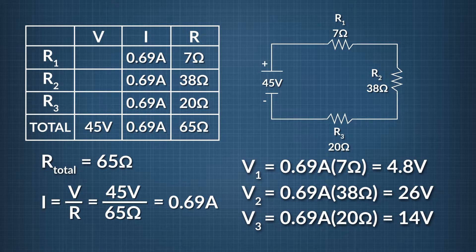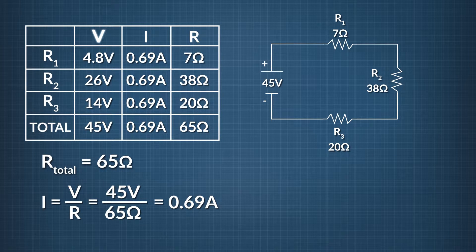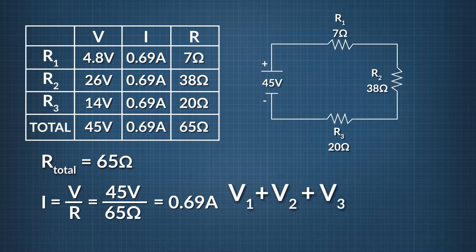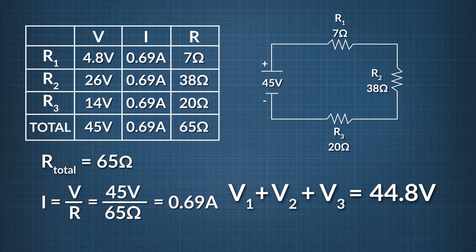Let's fill in these last blanks in the VIR chart. To check our work, we apply our knowledge of how the numbers should add up. The voltages across the three resistors should add up to 45 volts total. Adding 4.8 plus 26 plus 14 gives us 44.8 volts — within rounding error, it matches. Current is the same everywhere in a series circuit, and our I column confirms this. And 7 plus 38 plus 20 ohms equals 65 ohms, so our resistance values add up as expected. With the chart complete, we can answer any questions about voltage, current, or resistance in this series circuit.